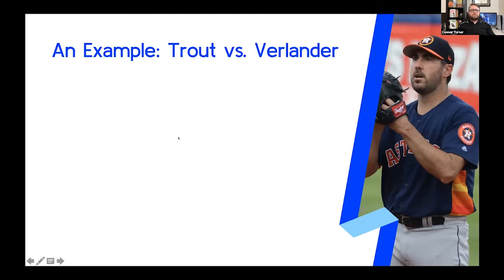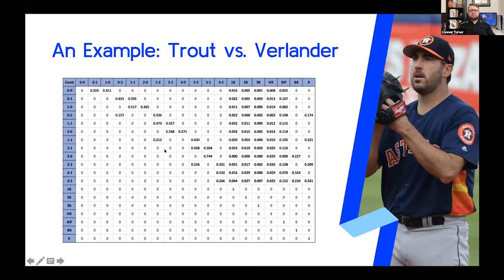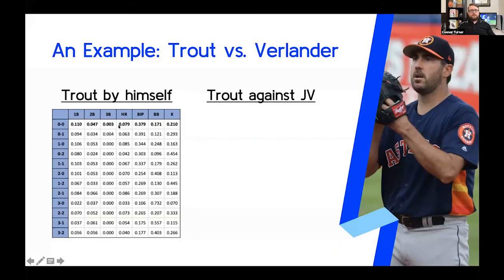This works out really well for two main reasons. One, it takes the inputs from both players as equals. And two, as it turns out, the average of two stochastic matrices is itself a stochastic matrix, which allows us to run this model and get to an outcome matrix. So our transition matrix for the Trout and Verlander at-bat looks something like this, and just like we did with Trout, we can use this to create our steady state and outcome matrix for the combined at-bat.